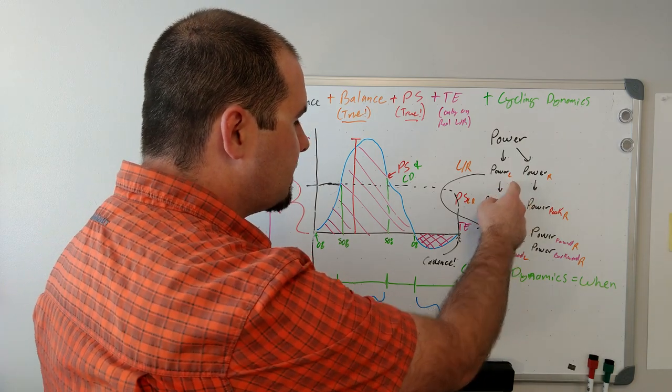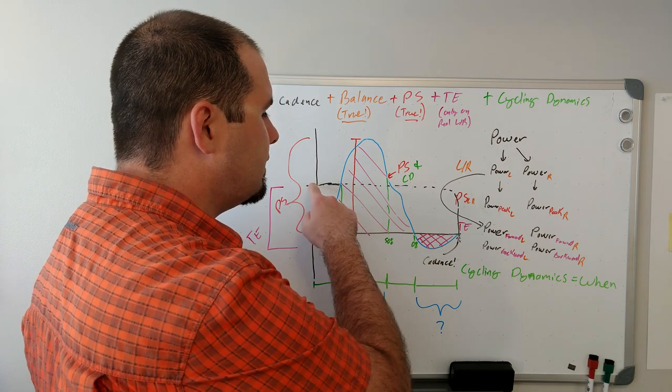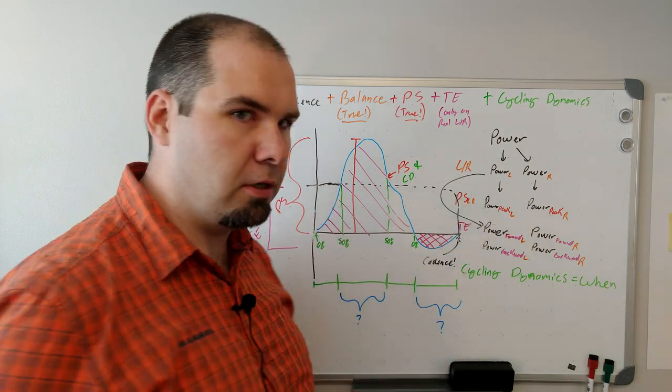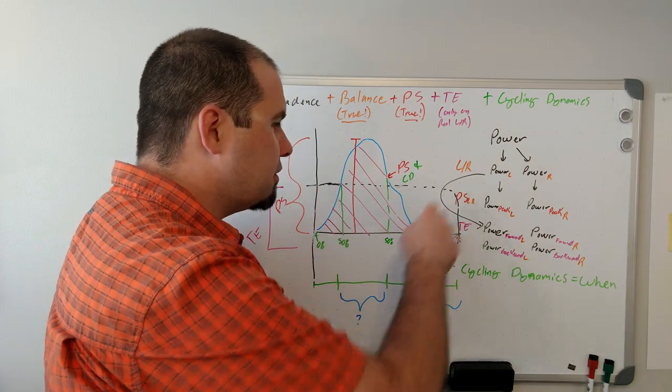So with our power now dissembled, and we know what our cadence is at that time, we essentially can figure out that we have this flat torque curve. Now that's not the actual curve, that's our average. But that average is our starting point.